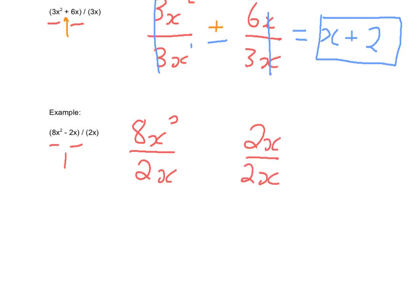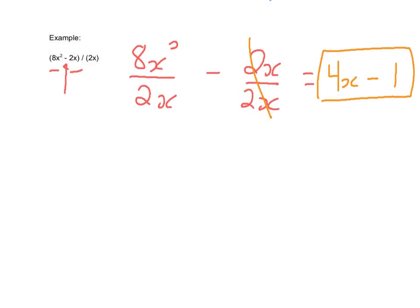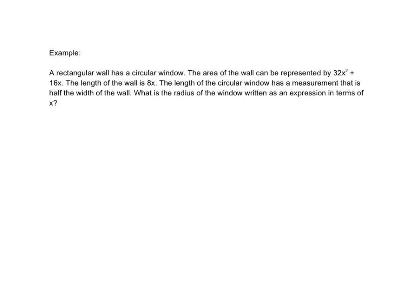So we've got 8 divided by 2 is 4. x squared divided by x is x minus 2x divided by 2x. Everything cancels out to be 1. 4x minus 1. Let's see where there might be an application for this.